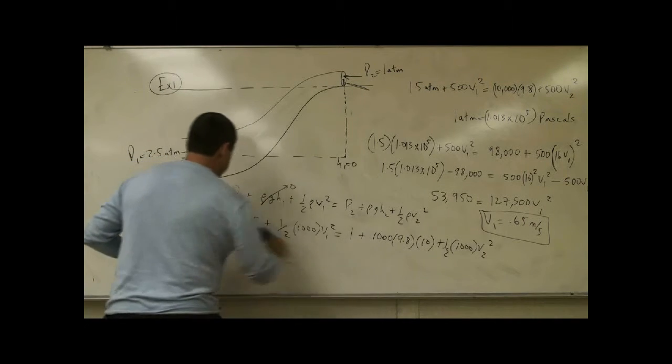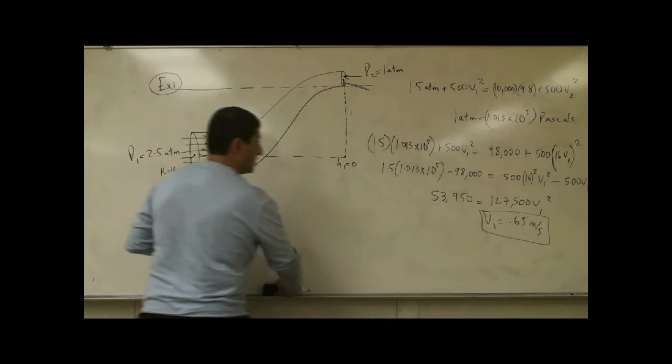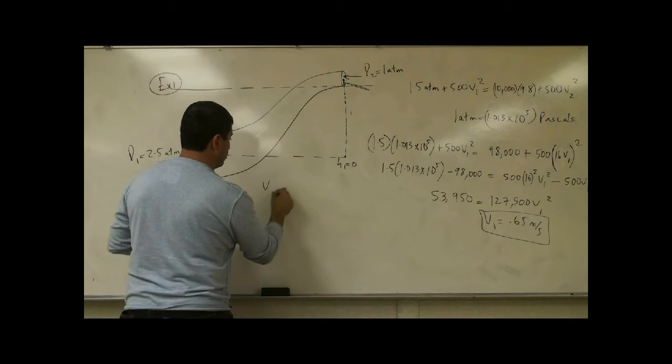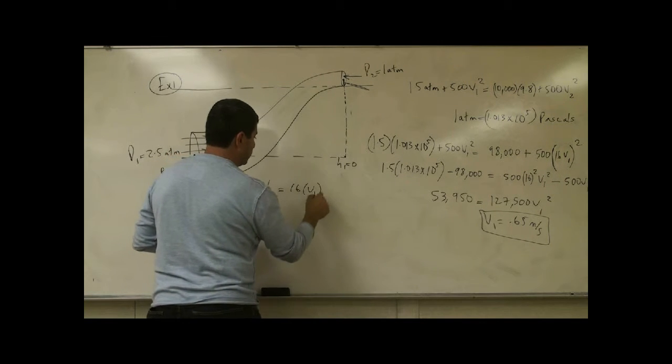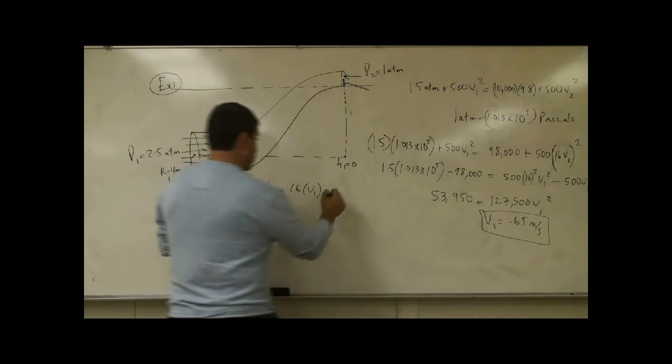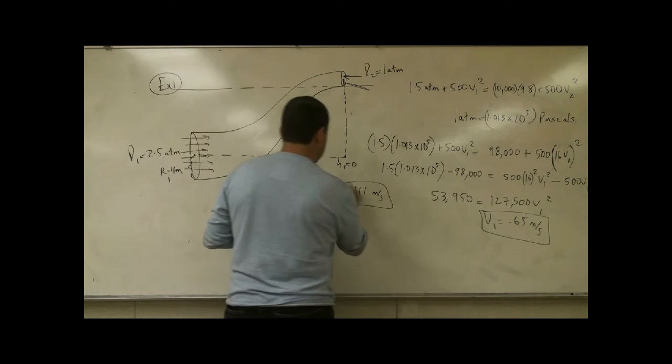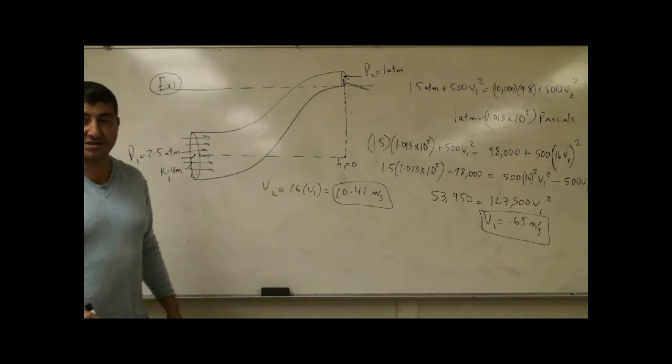Now what's V2? V2 is going to be quite faster than that. V2 is going to be 16 times V1. So that number times 16, 10.41 meters per second. So that's actually quite fast.